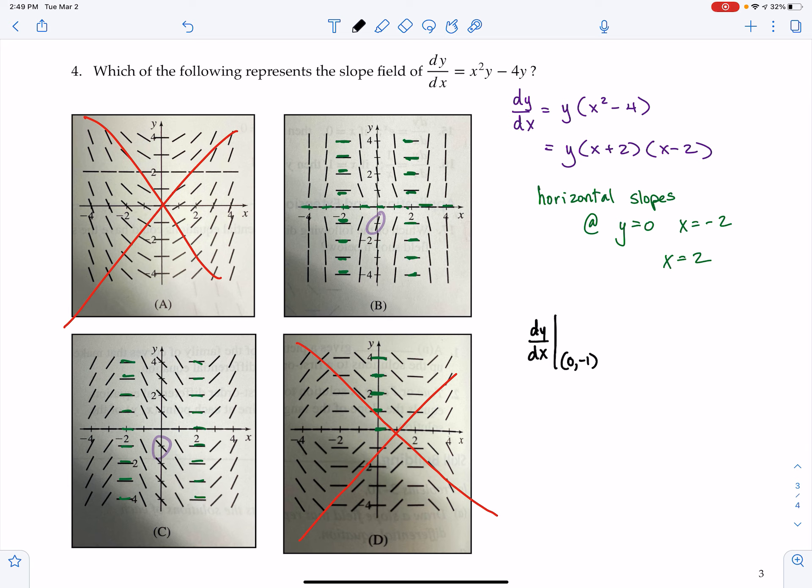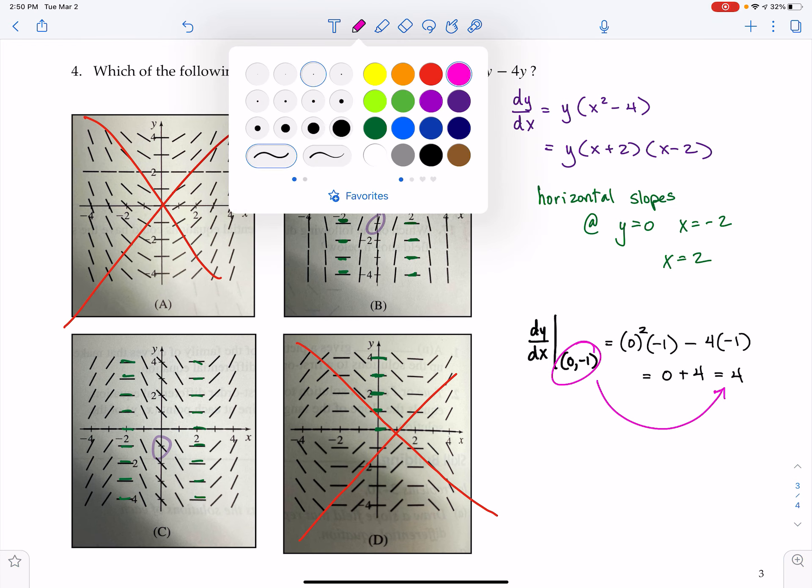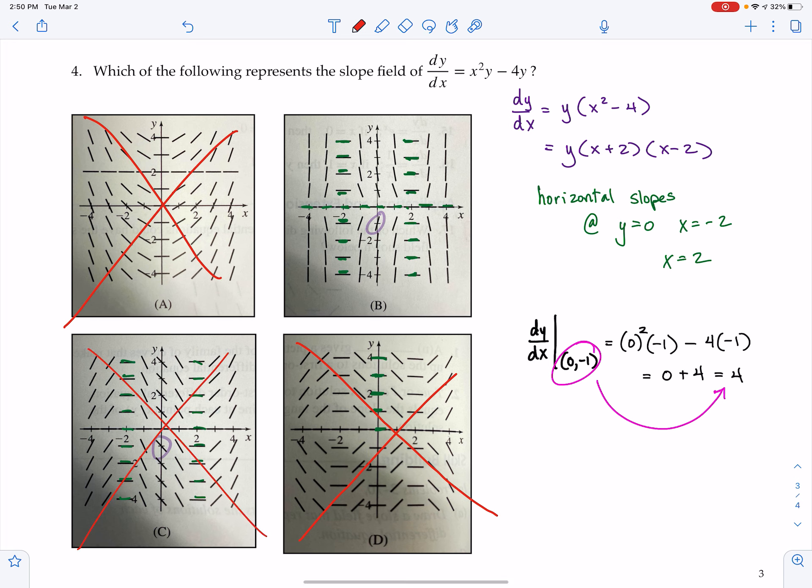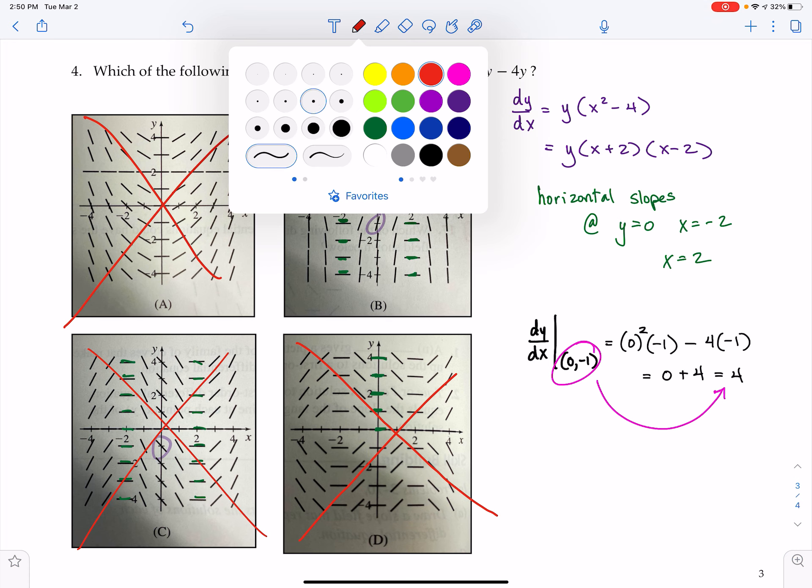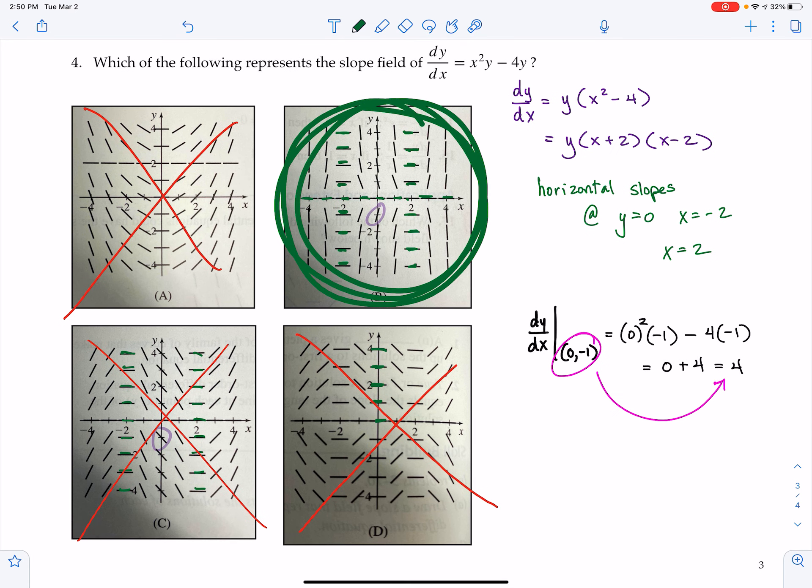So what I'm going to do is I'm going to plug in zero comma negative one, and see what answer I get. Do I get a positive answer or a negative answer? When I say plug that in, I mean literally everywhere I see an x, I put a zero. So this is zero squared times y minus four times y. So I get zero plus four equals four. So what this is saying to me is that at zero comma negative one, I should see a line segment with a slope of positive four. And since at that point on graph C, we see a negative slope, we can cross that out, and we are left with a correct choice of letter B.